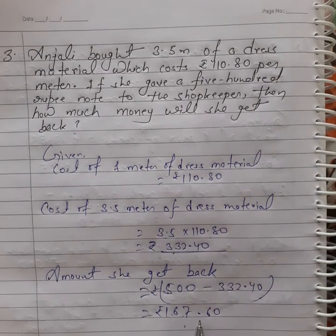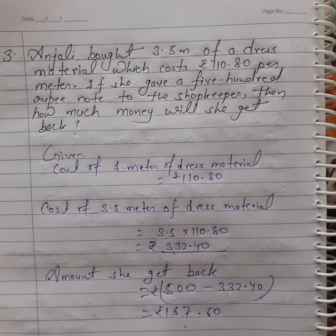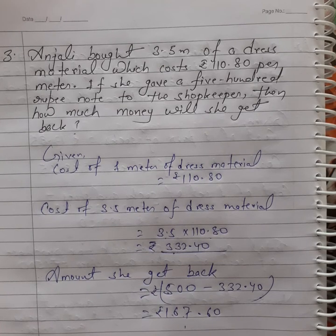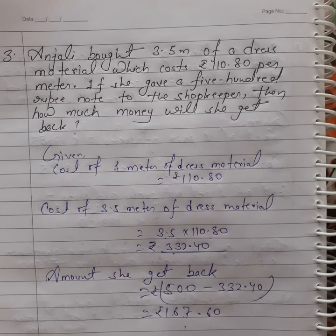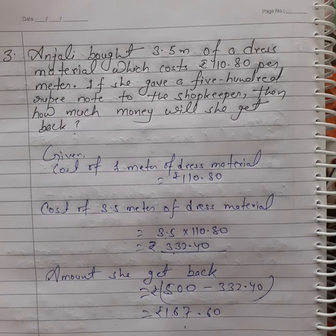The shopkeeper returns 167.60 rupees to Anjali. That's all for today. I hope you all understand how we solve different types of problems based on decimals. Thank you and have a wonderful day.